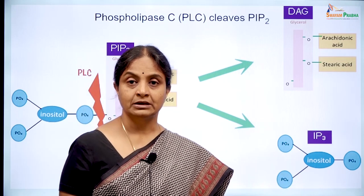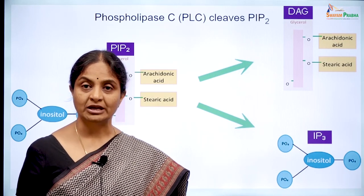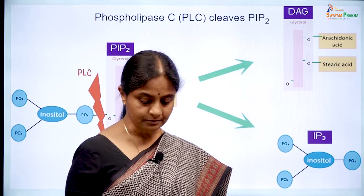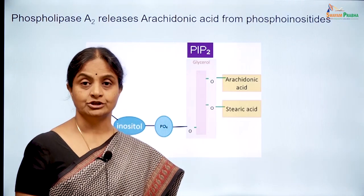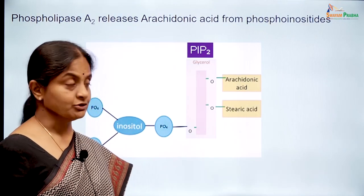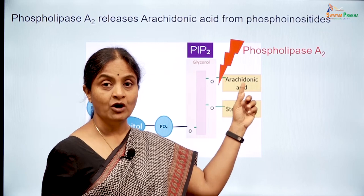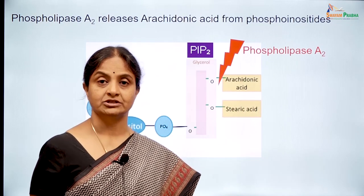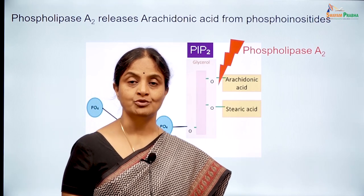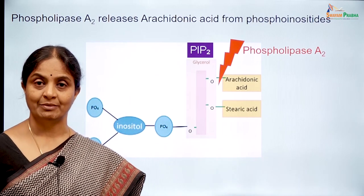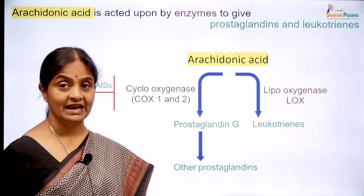Inositol triphosphate can open calcium channels on the endoplasmic reticulum to release calcium — we will learn more about that later. The other enzyme, phospholipase A2, can specifically cleave off arachidonic acid from the phosphoinositides. Arachidonic acid is an important signaling molecule because it can be processed within the cytoplasm to form a set of powerful compounds called prostaglandins.